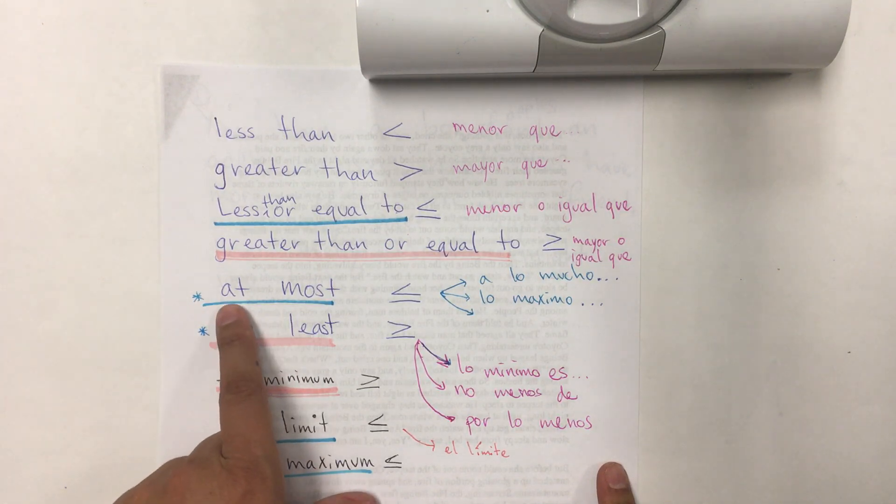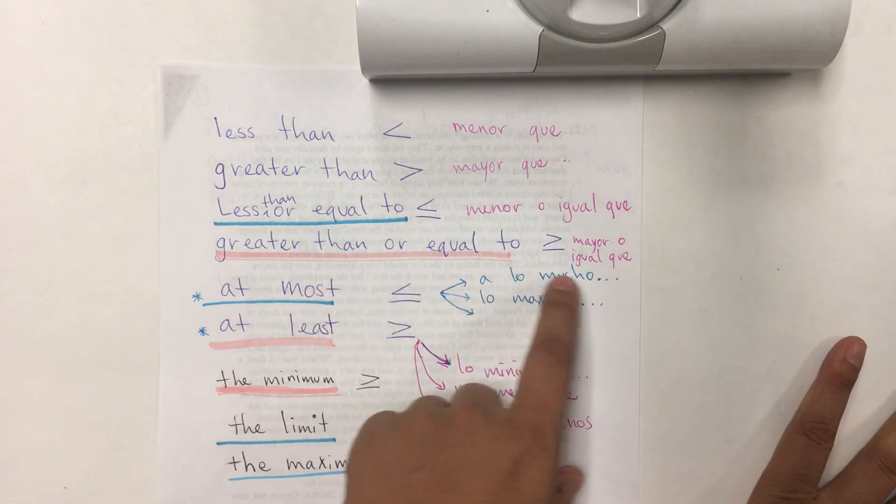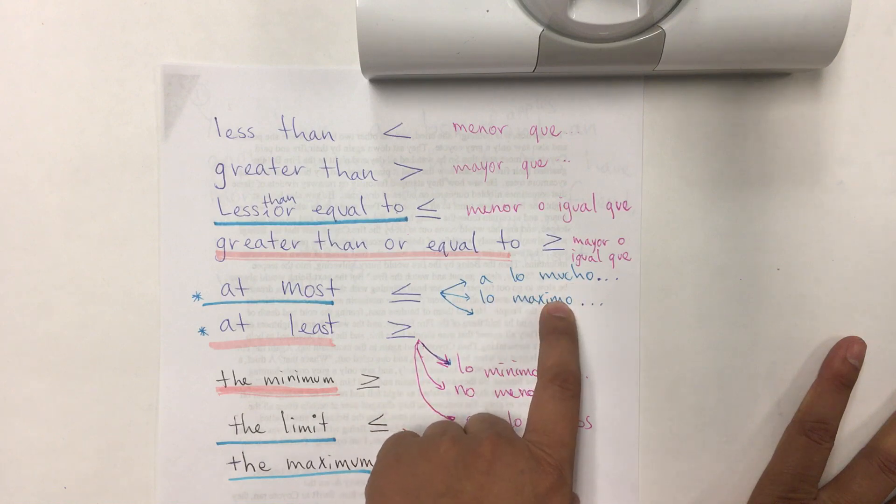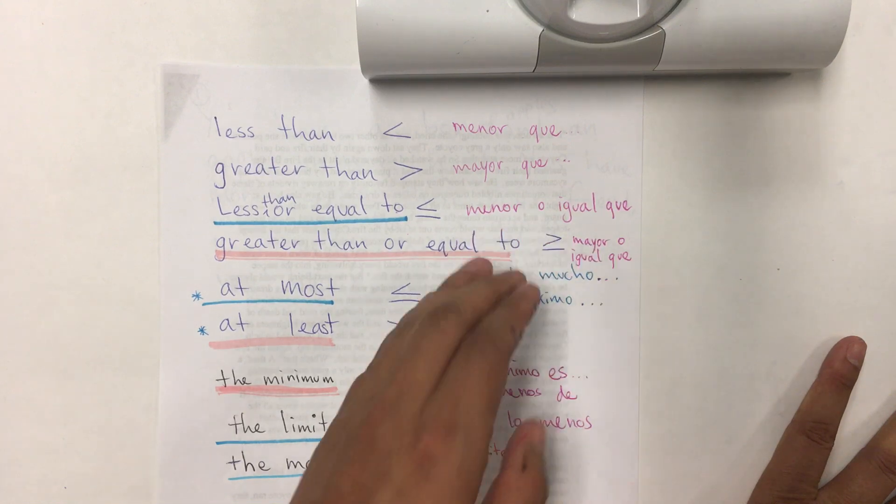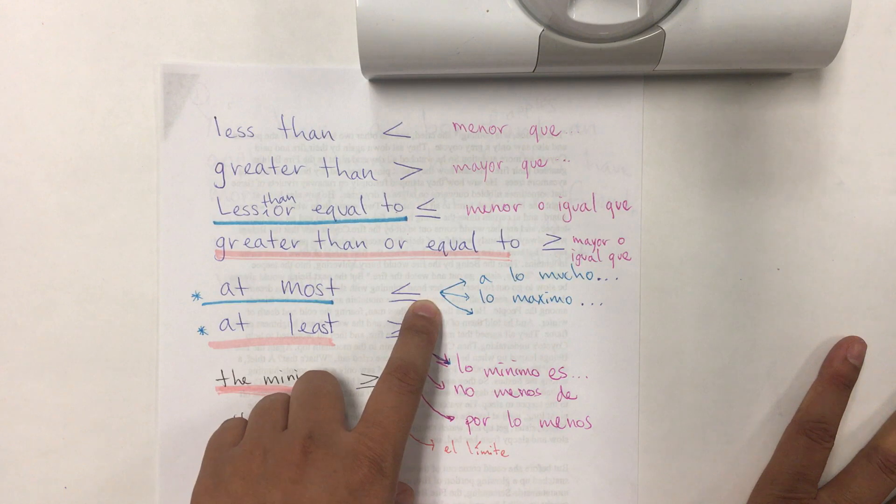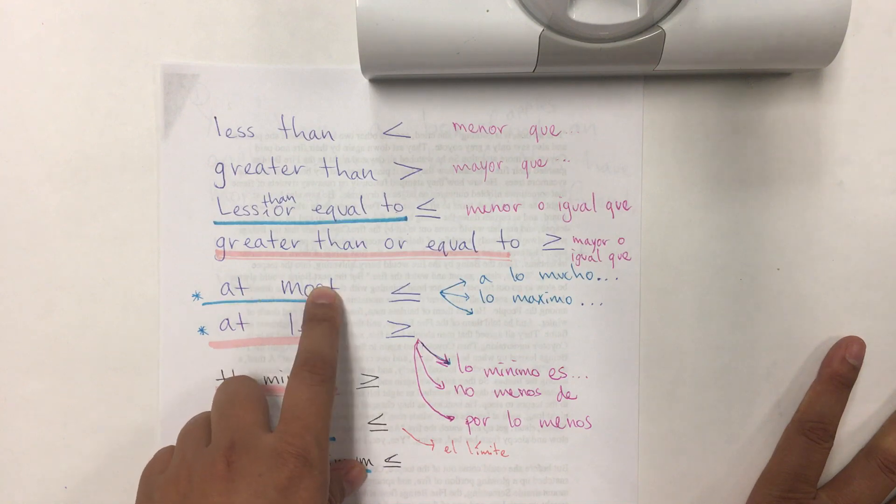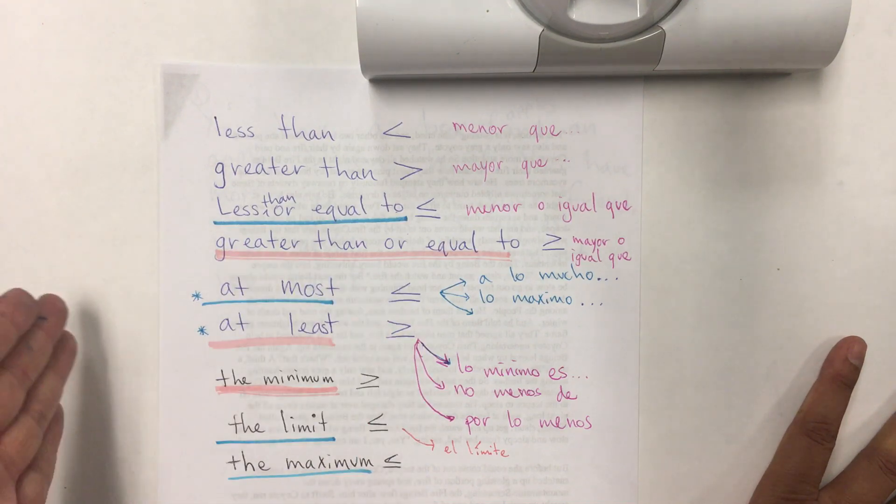The tricky ones are at most. At most, a lo mucho, lo máximo. Eso es no más de ahí. So, it's actually less or equal than. Menos o igual que eso. I can eat three tortillas at most. Basically, I need to eat three or less.